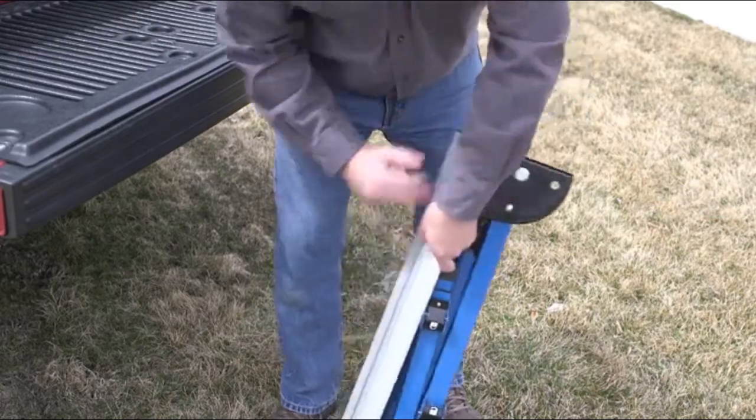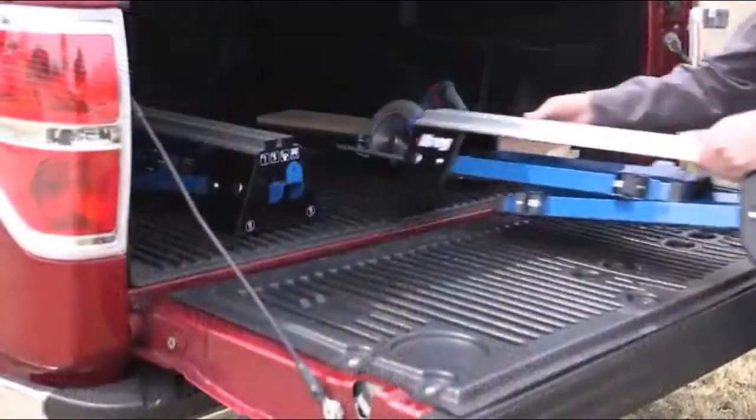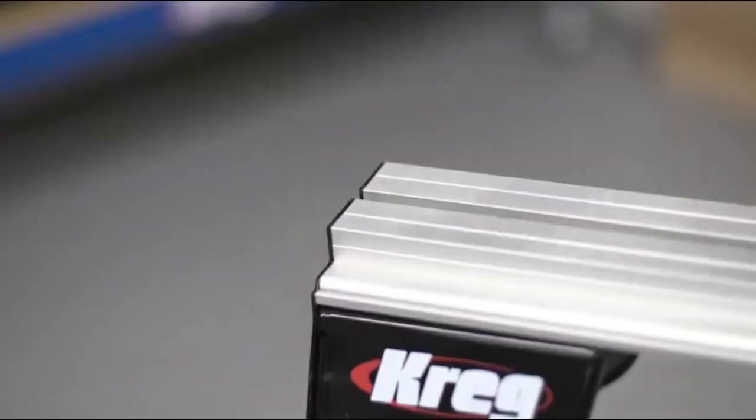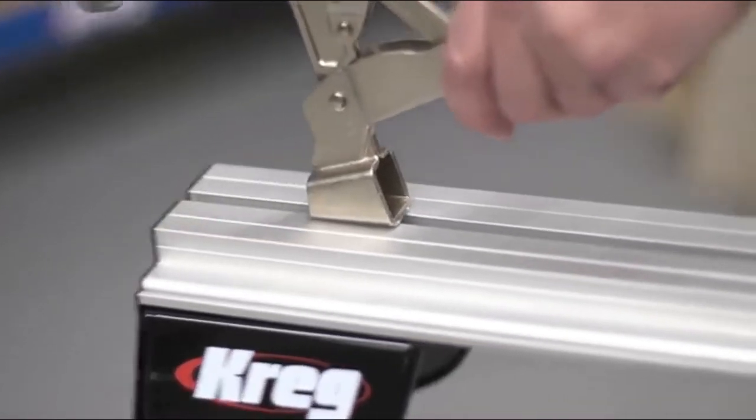With the legs folded, the Trackhorse is also easy to transport to wherever you want to work. Built-in, dual-mode clamping adds even more versatility.